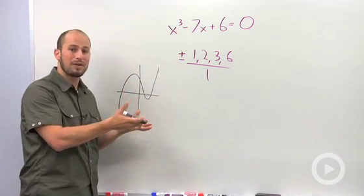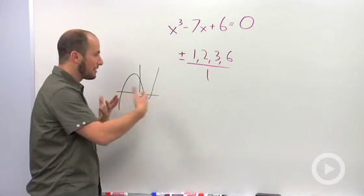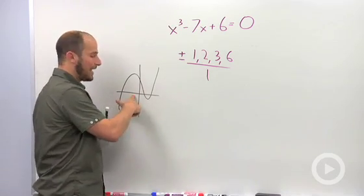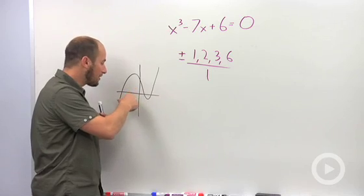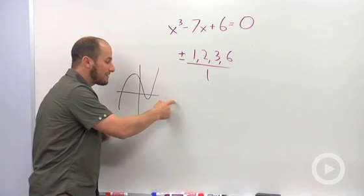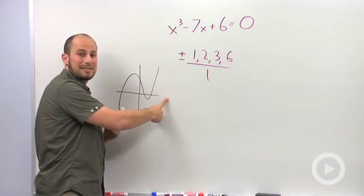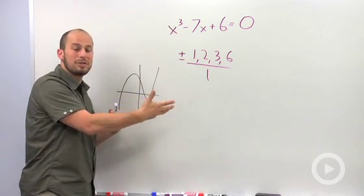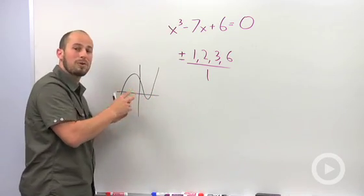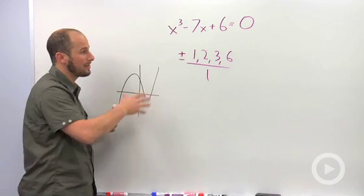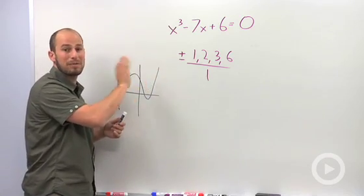what are our realistic zeros? Looking at this, we could say, okay, negative 1 doesn't make any sense because there's no zero around here. Positive 6 doesn't make any sense because there's not a zero here. So we can use process of elimination to figure out what our more realistic zeros could be, making our work significantly less than having to plug everything in.